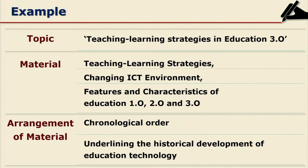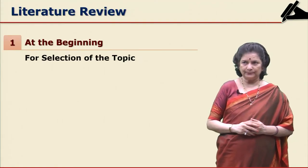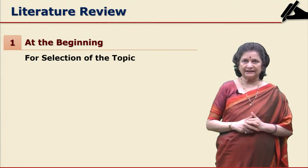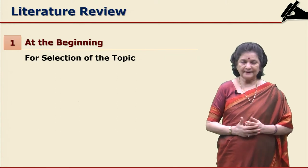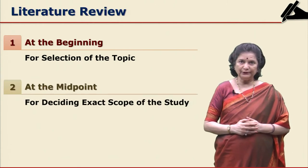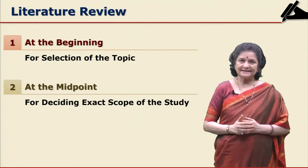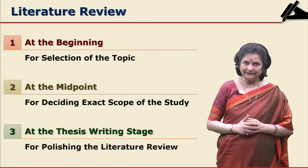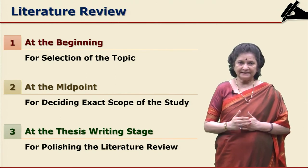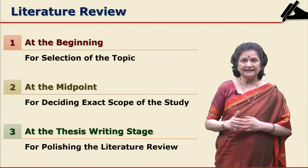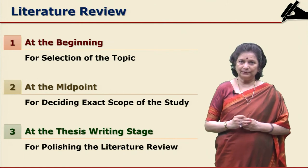These are some innovative ways of writing a literature review. Writing a literature review requires rewriting at three stages. First, at the beginning, you engage in literature review for selection of the topic. Second, at the midpoint of your research, for deciding the exact scope of your study — this is at the time of data collection. Third, at the end, at the thesis writing stage, for polishing your literature review, incorporating recent articles with a critical insight.